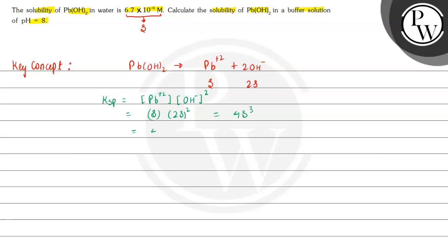So Ksp equals 4 × (6.7 × 10⁻⁶)³. On solving this we get the value as 1.2 × 10⁻¹⁵.